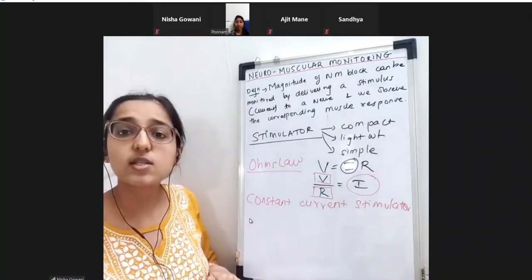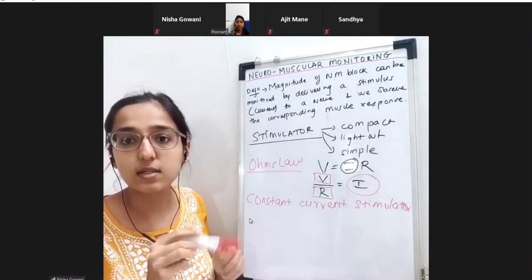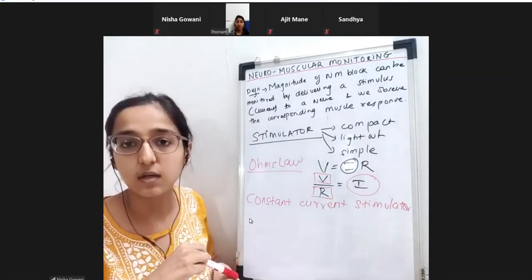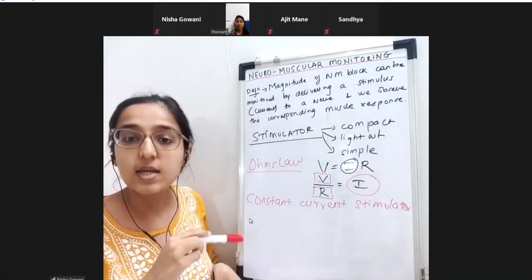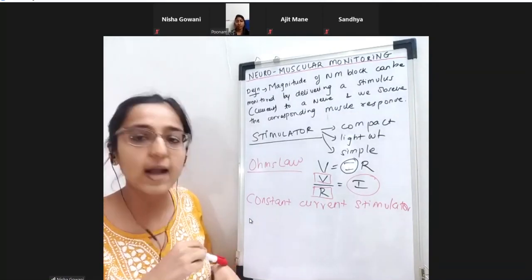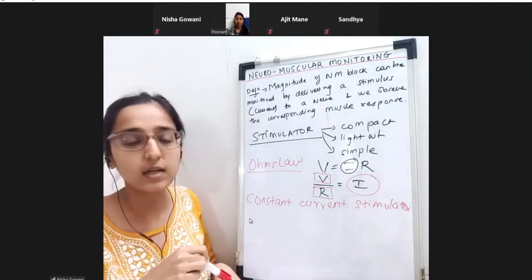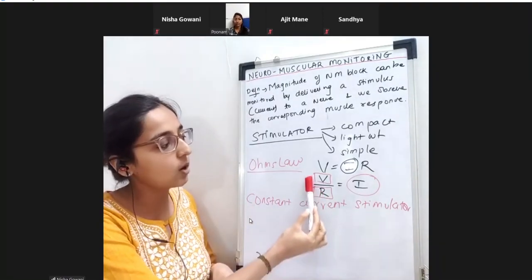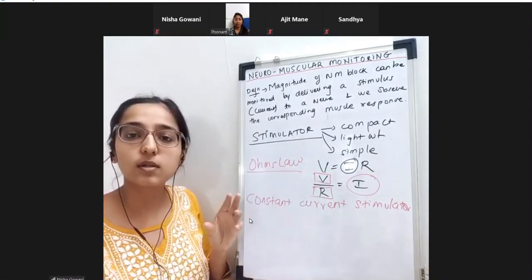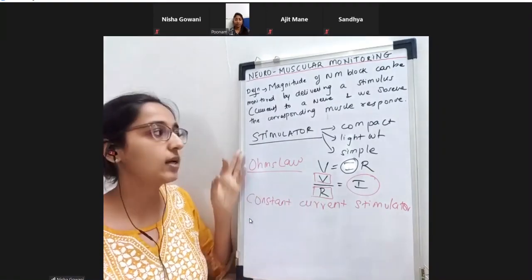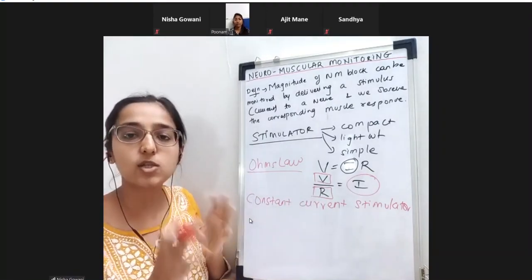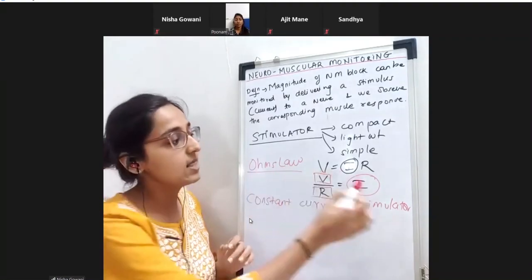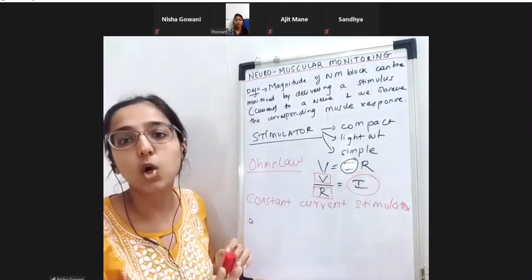Resistance is going to be offered by the skin and whatever tissues are there. That resistance can vary, and if the resistance varies, the voltage will change accordingly - the stimulator has that property. But in the end, the output current will be constant.